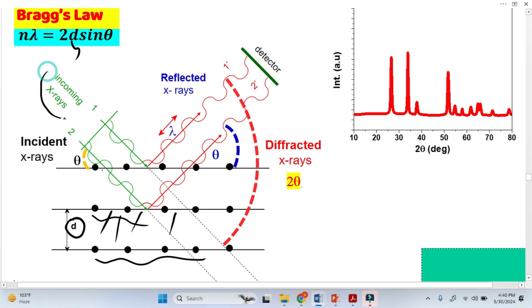This is the incident X-ray. When this X-ray strikes the planes here, the angle between this incident X-ray and the plane is basically the incident angle. This theta is the incident angle. This is also the same theta here.